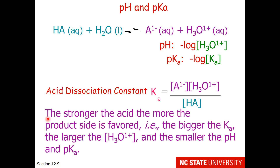The stronger the acid, the more the product side is favored. So if product is favored, an acid will have a large Ka and a large hydronium concentration. When you have a large hydronium concentration, the pH is low and also the pKa, because of the negative sign in front of the log.